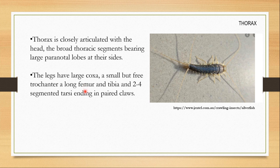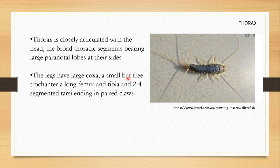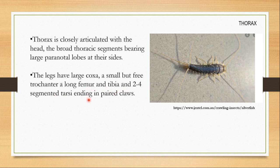The legs have a large coxa, a small but free trochanter, a long femur and tibia, and 2 to 4 segmented tarsi ending in paired claws. Each thoracic segment — prothorax, mesothorax, and metathorax — bears one pair of legs. The coxa is quite large and the trochanter is a small but free elbow-like joint, followed by a long femur and tibia, and 2 to 4 segmented tarsi ending in paired claws instead of a pretarsus.